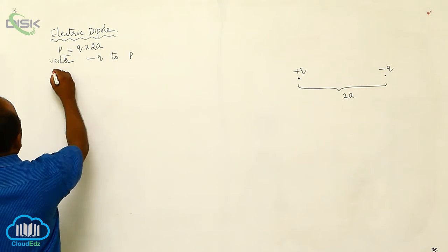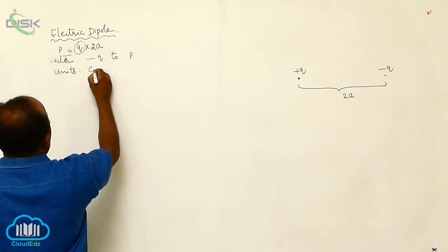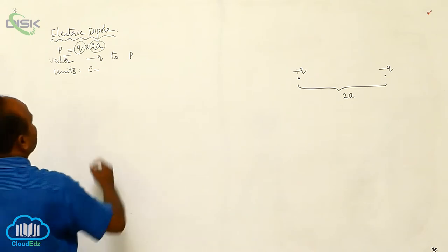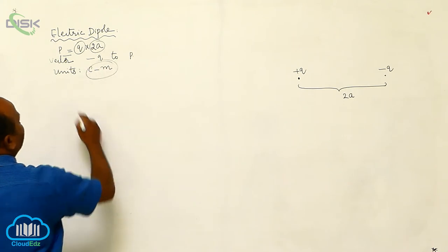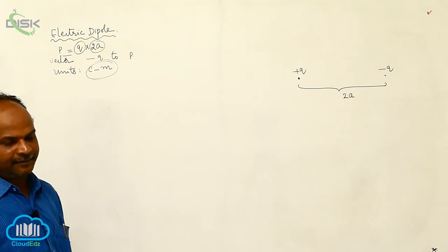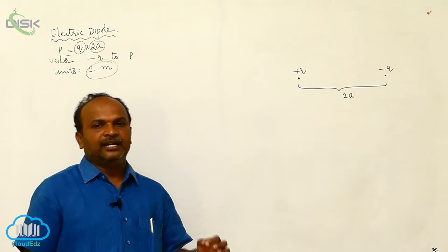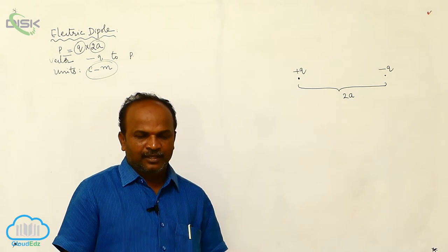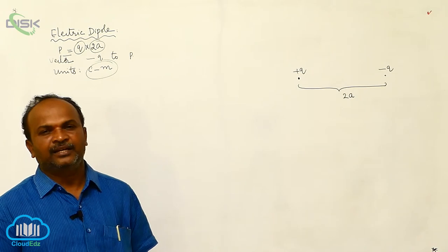What are the units of electric dipole moment? Charge is measured in Coulombs, and separation — which is 2A — is a distance measured in meters. Therefore, the unit of electric dipole moment is Coulomb-meter. In the next topic, we shall calculate the electric field intensity on the axial line of the electric dipole and the electric field intensity on the perpendicular bisector of the electric dipole.